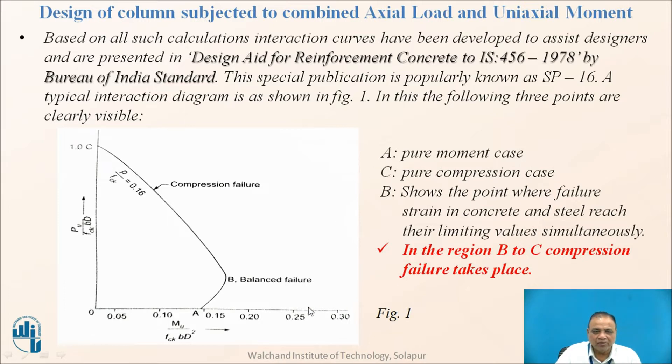A is the pure moment case, that means there is no axial load. C is pure compression case, that is axial compression case. And B, that is this B point, shows that the point their failure strain in concrete and steel reach their limiting values simultaneously. Our columns are usually between B and C, that is compression failure. In region B to C compression failure takes place.